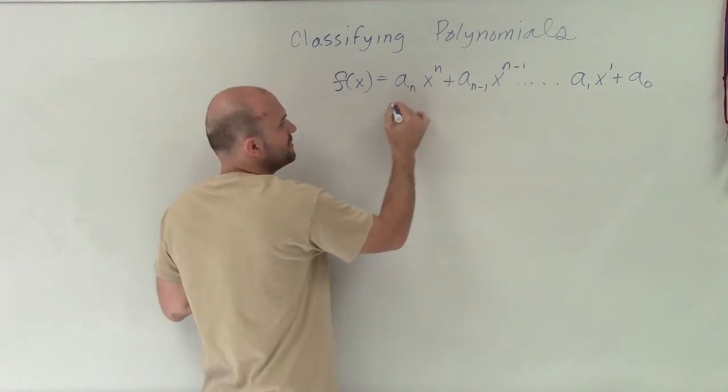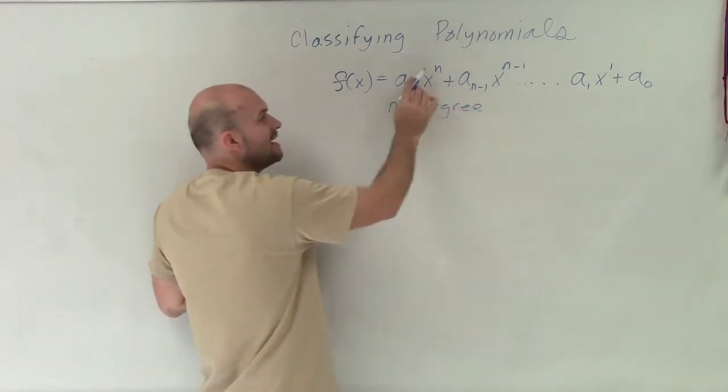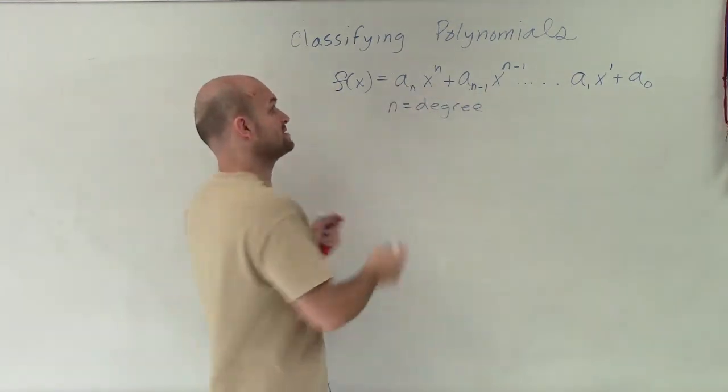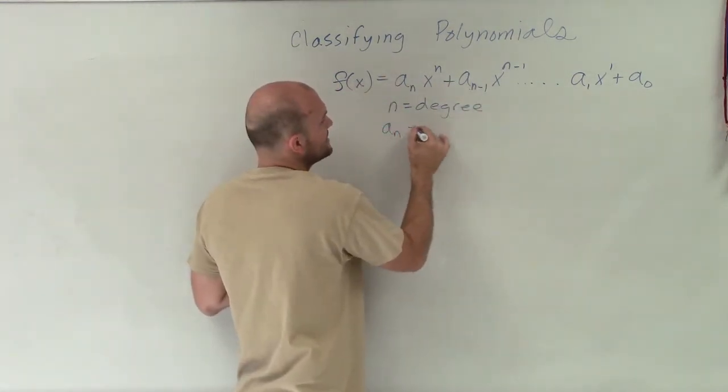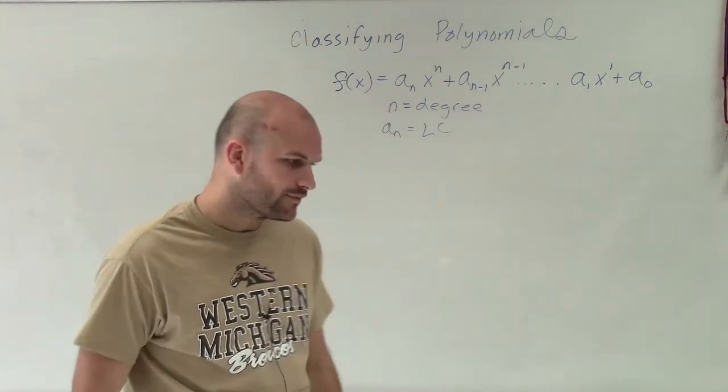And a_n is what we call our leading coefficient, because this nth term, this is going to be your degree, where n equals the degree of the polynomial function, and that's going to be the largest exponent, as you go down in descending order. And a_n is going to be your leading coefficient.